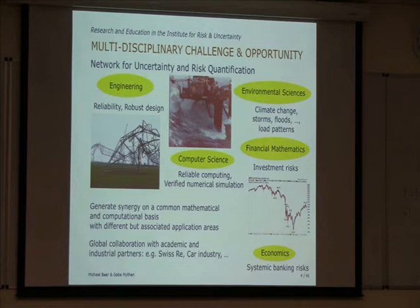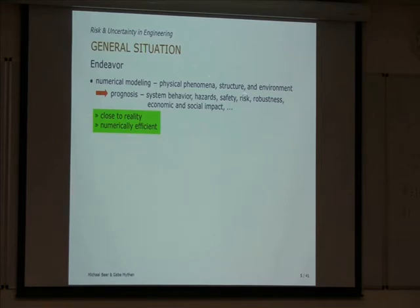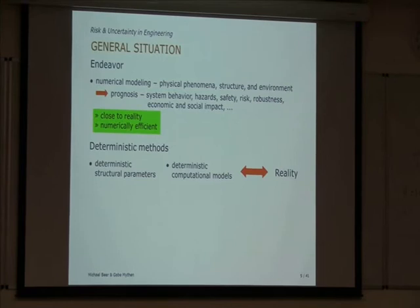Now I would like to come to engineering specifically — how we address risk and uncertainty in structural engineering. Our general endeavor is numerical modeling of physical phenomena, structure, and the environment to arrive at a prognosis regarding system behavior, hazard, safety, risk, robustness, and economic and social impact. To address this, our analysis must be close to reality and numerically efficient. In engineering, most analyses are done in a deterministic way, but we have to ask how close this is to reality.